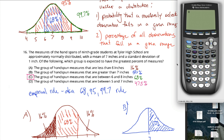You might think this is under the stat menu, but it's not. This is a normal distribution question, so what you're looking for is under the distribution menu, which is kind of hidden — it's written above the variables key in blue. Hit Second and then Variables to get into the distribution menu. The function you want is normalCDF. Normal because it's the normal distribution, and CDF stands for cumulative distribution function — cumulative meaning the total area between two different bounds. Depending on your calculator software, it'll either open the function directly or bring up a screen asking for the four inputs.